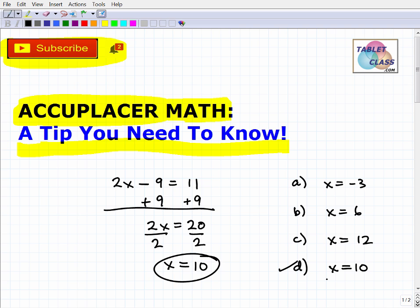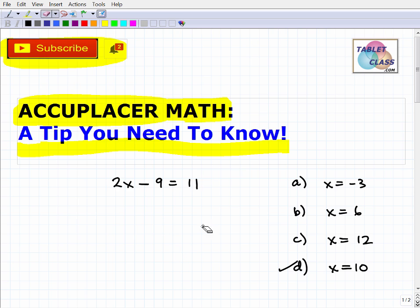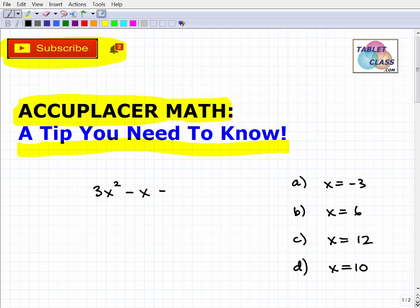So again, the Accuplacer is multiple choice. Now, let's kind of go through and change the scenario a bit here. What if the equation, now that's a very nice equation. What if the equation is something like this? 3x squared minus x equals negative 5. Now in this case, you may not know how to do this particular equation. So you're saying, well, geez, I don't know how to approach this. And in order to solve this particular equation, there's multiple steps involved. It could take you a significant amount of time.